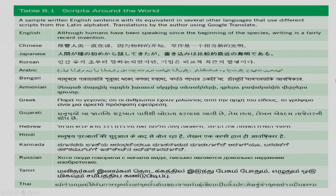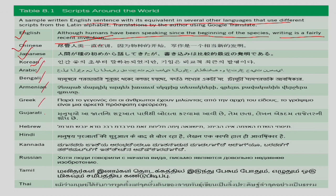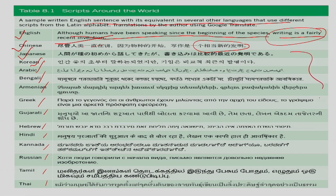Here is a sample of a written English sentence — 'Although humans have been speaking since the beginning of the species, writing is a fairly recent invention' — shown in multiple scripts including Chinese, Japanese, Korean, Arabic, Bengali, Armenian, Greek, Gujarati, Hebrew, Hindi, Kannada, Russian, Tamil, and Thai. As you can see, these languages have their own symbols representing each word at the level of a word, syllable, or phoneme. In English the writing system uses phonological interpretations, whereas in Chinese each symbol represents either a morpheme or a word.